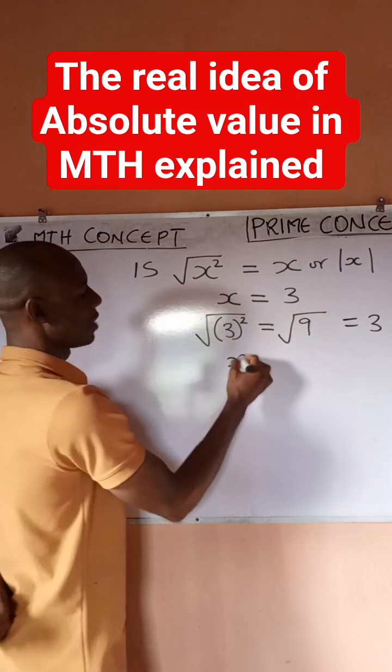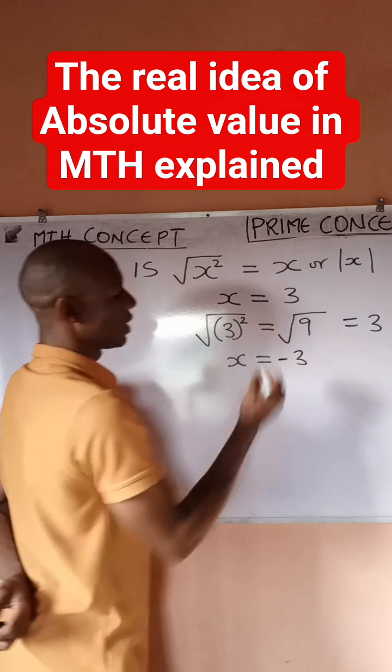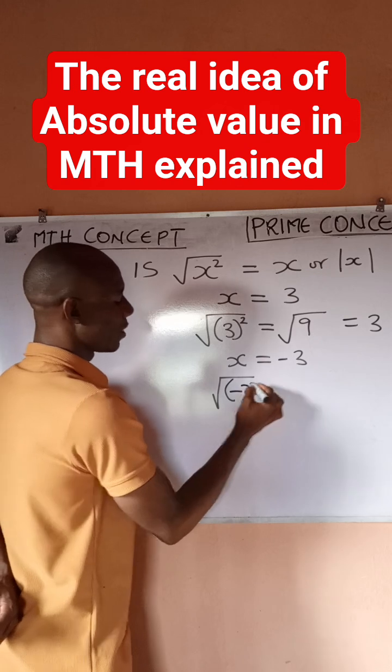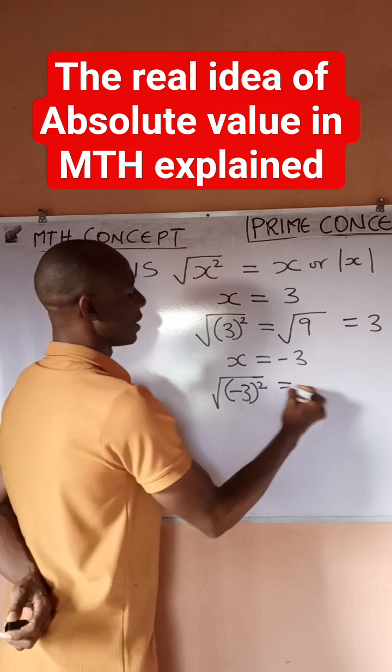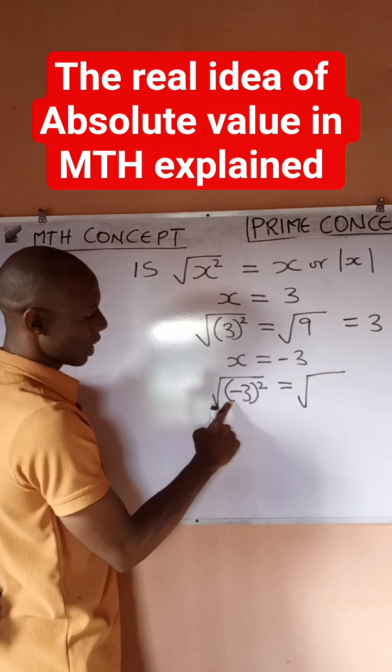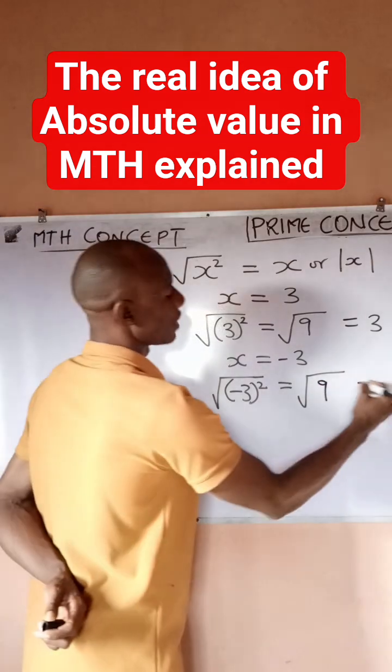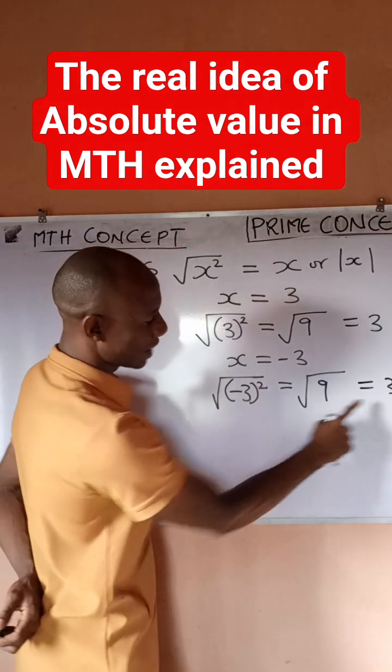Now let's check if x is minus 3. Let's see what we're going to get. So I'll have the square root of minus 3 all squared, and this would be equal to... now minus 3 squared is still the same thing as 9, and square root of 9 is 3. So you'll notice that this time around we are getting 3 instead of negative 3.